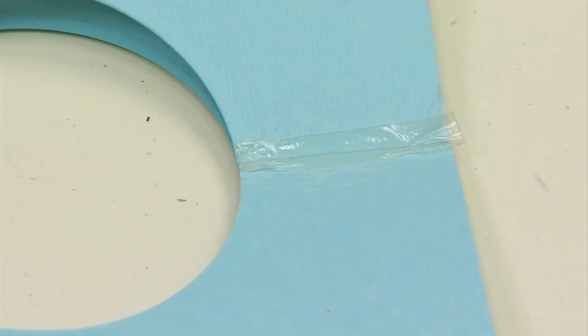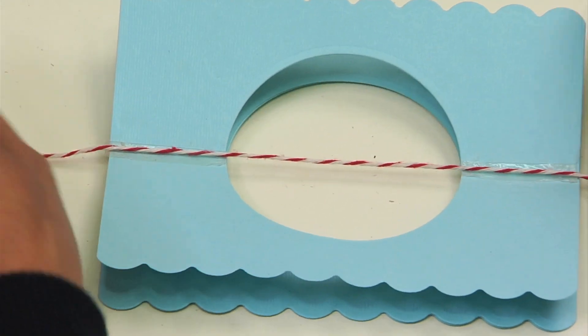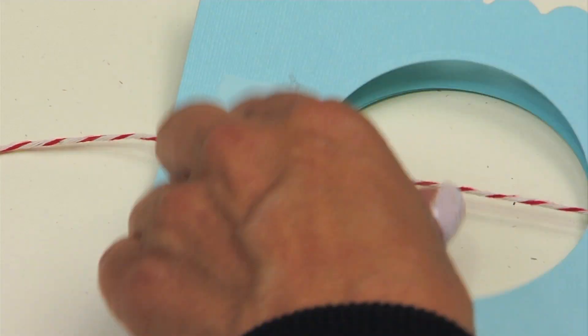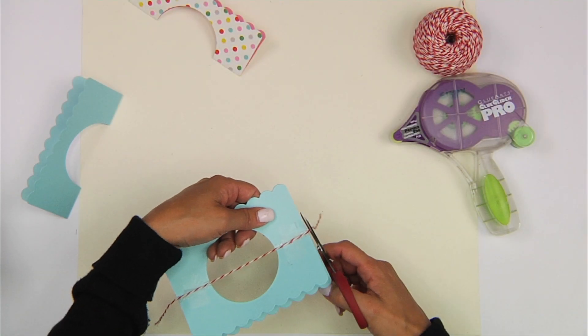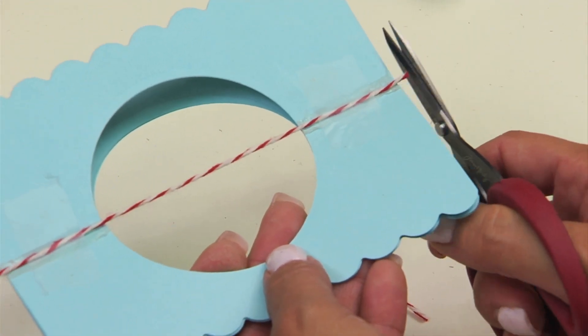I remove the backing from the tape, and now I'm going to place my twine right down the center of the card. Just to ensure that twine stays in place, I'm going to use a little bit of clear tape. Then you'll cut the ends of your twine, and I like to leave just a little bit at the top and the bottom of the card.